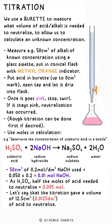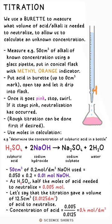Now we can use our actual volume of acid measured. Finally, we just calculate the concentration by doing moles divided by volume, which gives us a concentration of 0.4 mol/dm³.